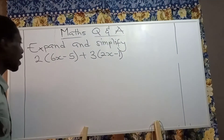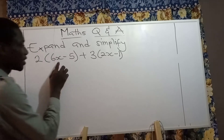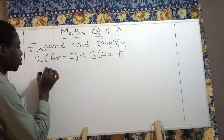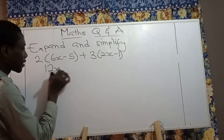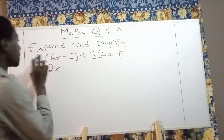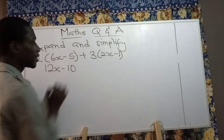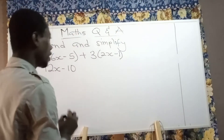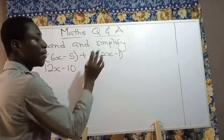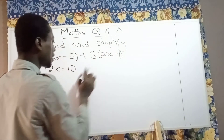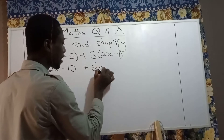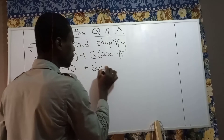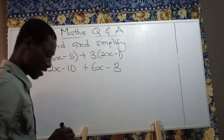Let's expand it. We have 2 multiplying 6x and then minus 5. So 2 multiplying 6x gives us 12x. Then 2 multiplying minus 5 gives us minus 10. Now we are done with this term. Moving to the next: positive 3 multiplying 2x gives us positive 6x, and positive 3 multiplying negative 1 gives us negative 3.